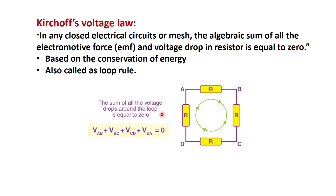In KVL, the sum of all voltage drops around the loop is equal to zero. Here we have multiple resistors in a loop, and the voltage drops across each resistor — V_AB + V_BC + V_CD + V_DA — sum to zero. This is Kirchhoff's voltage law.